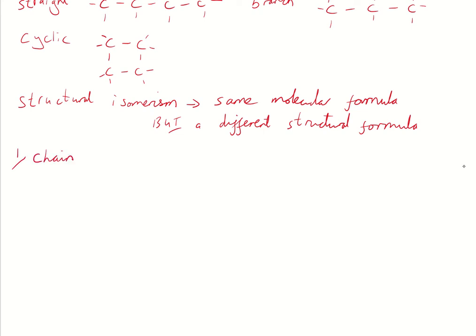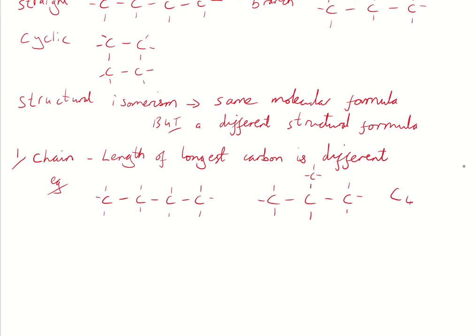First one, chain isomerism. Length of the longest carbon chain is different. For example, the example I just used up there previously. Here, they've both got four carbons and they both have ten hydrogens. So they have the same molecular formula, these two, but they have a different structural formula. They are stuck together in a different manner. So that's the first type of chain.